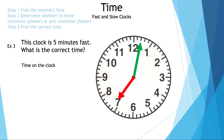Now let's take a look at example three. This clock is five minutes fast — what is the correct time? Step one: find the incorrect time that is on the clock, and it is 7:02.